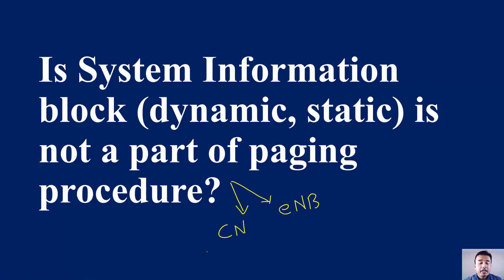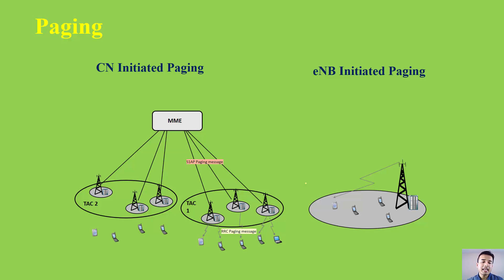Core network initiated paging takes place whenever you get an email or a voice call. If you are not attending your phone, your phone will start ringing because someone is calling you — that happens as a result of paging. Getting a notification about an email or anything like this is also a result of core network initiated paging procedure.